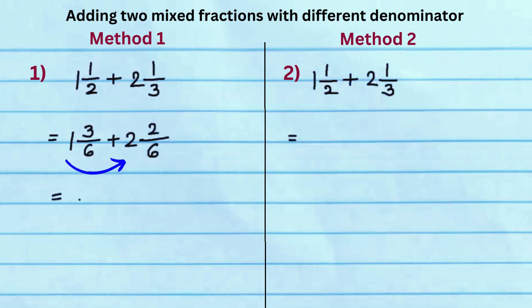Add whole numbers 1 and 2 and fractions 3 over 6 and 2 over 6 to get the answer 3 and 5 sixths.